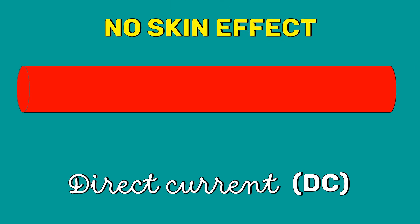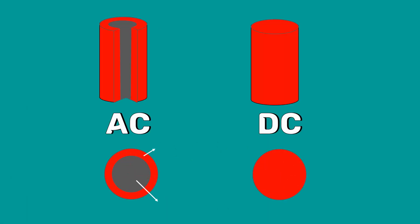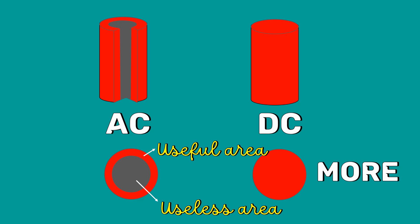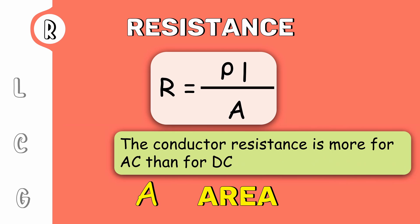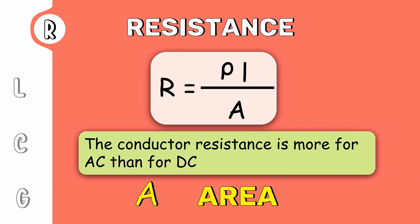The current is uniformly distributed over the whole cross-section of the conductor. The useful cross-sectional area or effective cross-sectional area of the conductor will be more when a DC current flows through it and less when an AC current flows through it. Since the resistance is inversely proportional to area, the conductor resistance is more for AC than for DC.